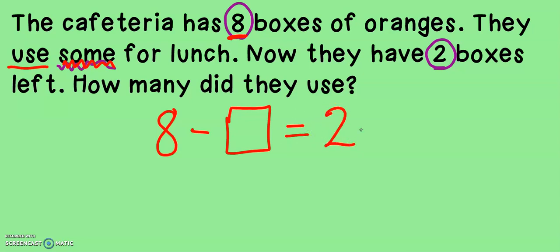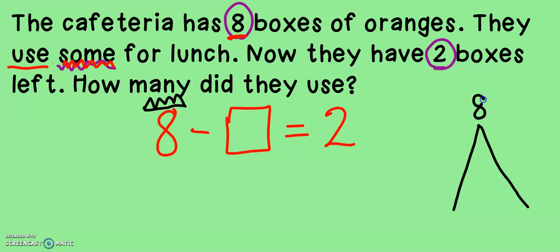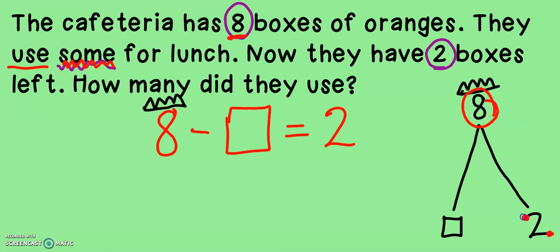Now they have two boxes left. How many did they use? So eight minus something equals two. If I put this on my math mountain, I see that I'm subtracting and I know that the king of my mountain always comes first when we subtract. So that means the king is eight, and my other two numbers must be my addends. I could start at two and count up to eight, or I can start at eight and count down two. Since two is such a small number, I think I'm going to count down using my touch points. So I start and say eight, seven, six. That means that they used six.